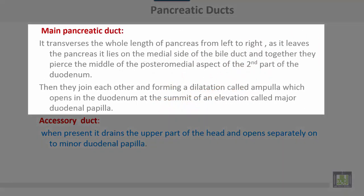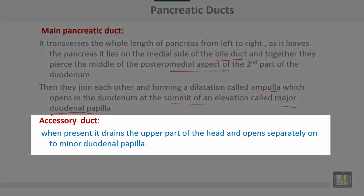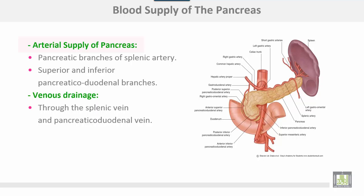The main pancreatic duct traverses the whole length of the pancreas from left to right. As it leaves the pancreas, it lies on the medial side of the bile duct, and together they pierce the middle of the posteromedial aspect of the second part of the duodenum. They join each other forming a dilatation called the ampulla, which opens in the duodenum at the summit of an elevation called the major duodenal papilla. The accessory pancreatic duct, when present, drains the upper part of the head and opens separately on the minor duodenal papilla.